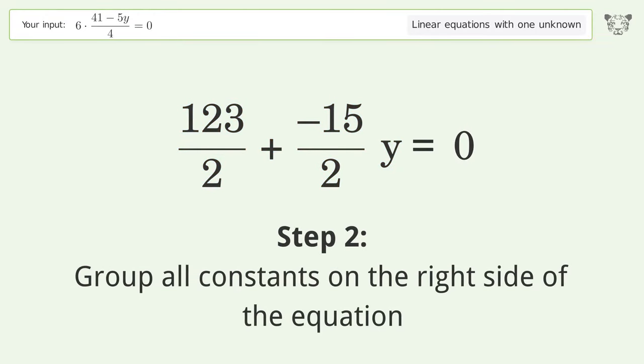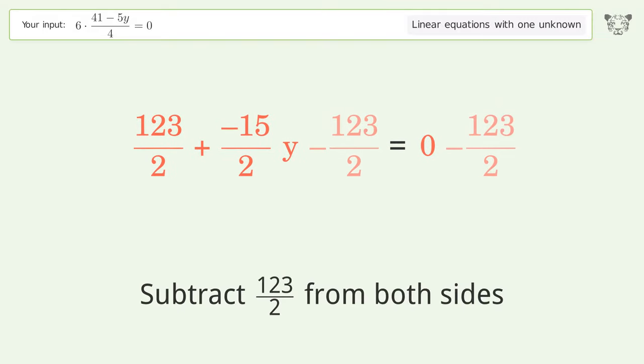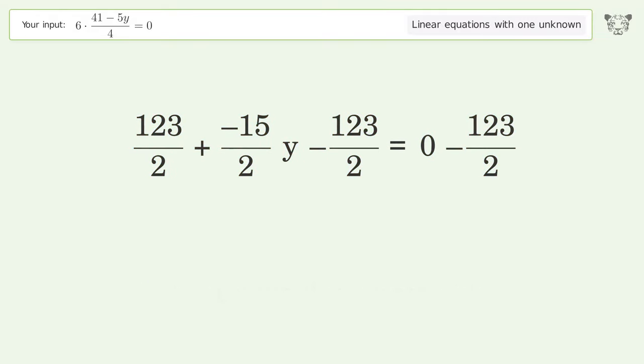Group all constants on the right side of the equation. Subtract 123 over 2 from both sides, then group like terms.